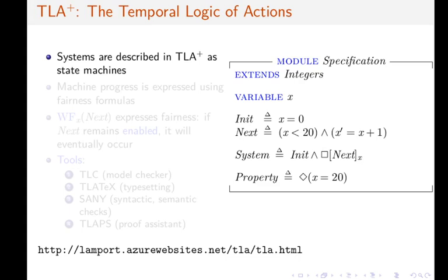One of the definitions defines the operator System as the conjunction of an initial condition that requires that x starts equal to zero and a temporal formula, the one with the box, that requires that in each step either x remains unchanged or if x changes, then it changes from a value x less than 20 to a value x' equal to x plus 1.